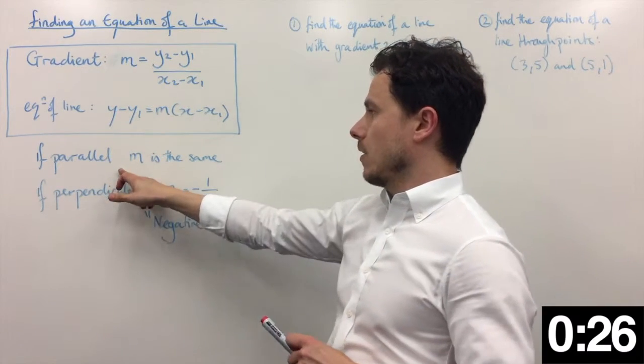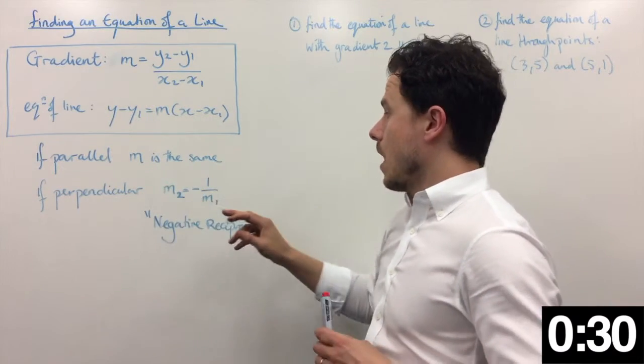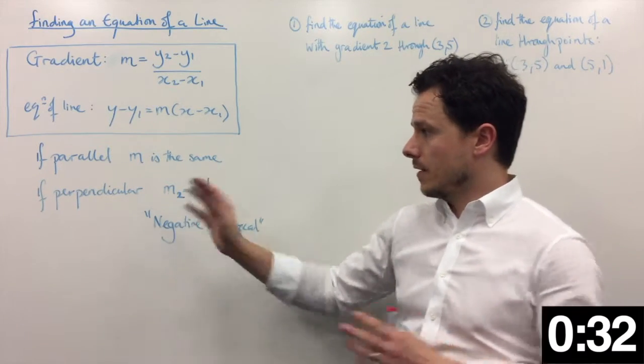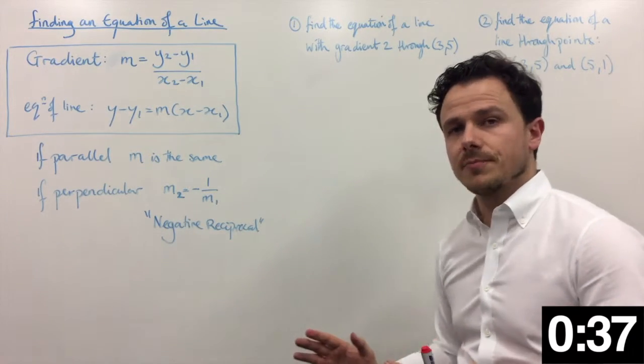From here, things to remember. If lines are parallel, then m in y equals mx plus c will be the same. Likewise, if you're looking at things where they're perpendicular, you have minus 1 over m. We'll say that's the negative reciprocal.